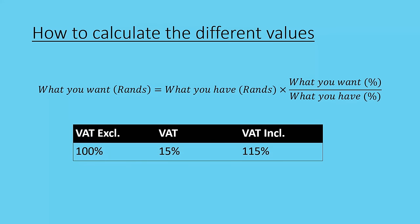Here is a really simple trick you can use. What you want in Rands equals what you've been given in Rands — usually your VAT exclusive amount — multiplied by what you want over what you have. You substitute in those percentages, the 100% and the 15%, to get what you want.